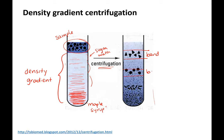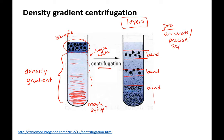All of your molecules that are very similar collect at different layers. The advantage of this type of centrifugation is it's very accurate and precise separation — more precise than differential centrifugation. The big disadvantage is making the gradient, making the layers, and it takes some skill to do this.